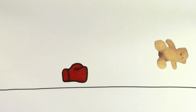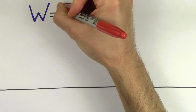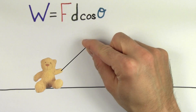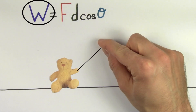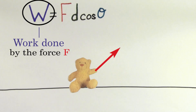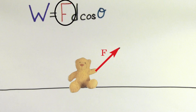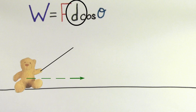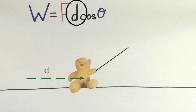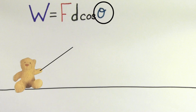The formula to find the work done by a particular force on an object is W equals Fd cosine theta. W refers to the work done by the force F — in other words, W is telling you the amount of energy that the force F is giving to the object. F refers to the size of the particular force doing the work. D is the displacement of the object, how far it moved while the force was exerted on it. And theta in cosine theta refers to the angle between the force doing the work and the displacement of the object.